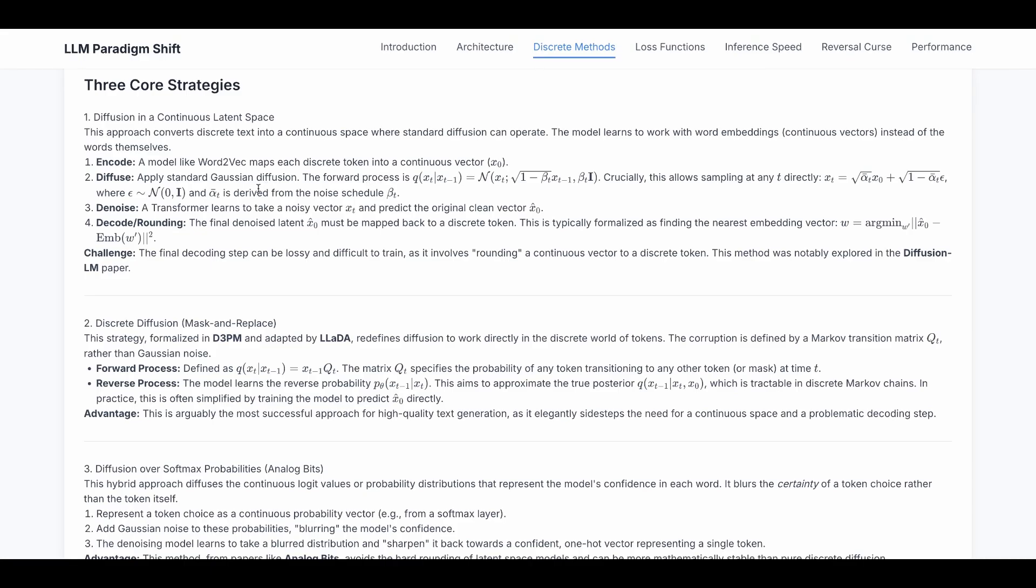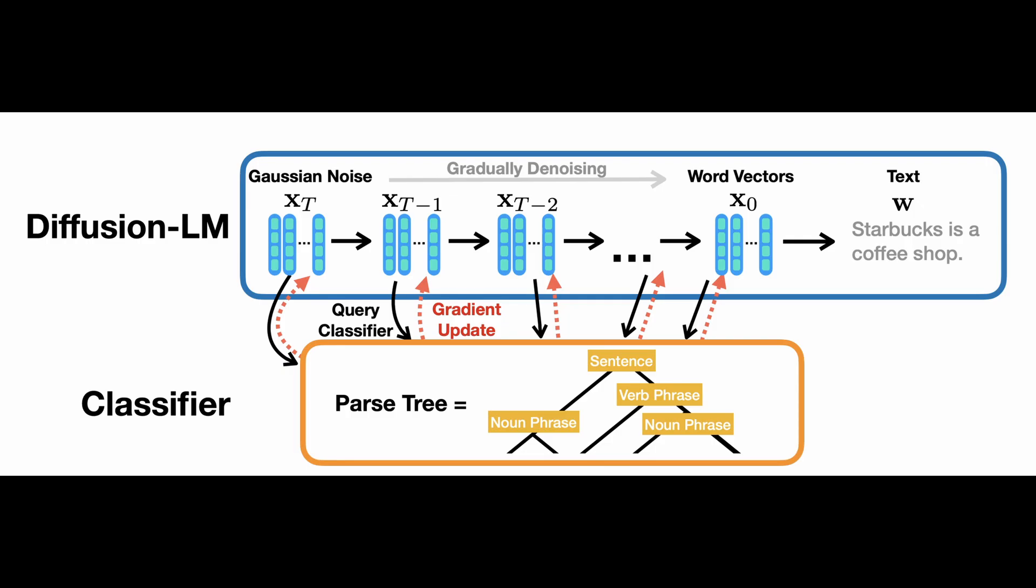And then we do the denoise, that is the reverse process. We use a transformer to learn to take a noisy vector xt and predict the original clean vector x0. We finally have an extra step. The final denoised latent x0_hat must be mapped back to a discrete token, an actual word. This is typically formalized as finding the nearest embedding vector.